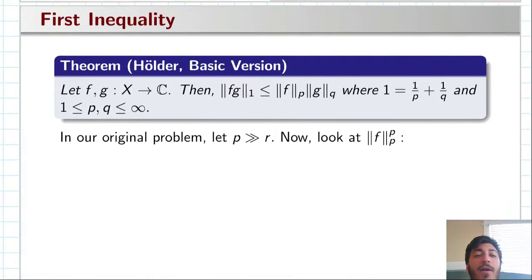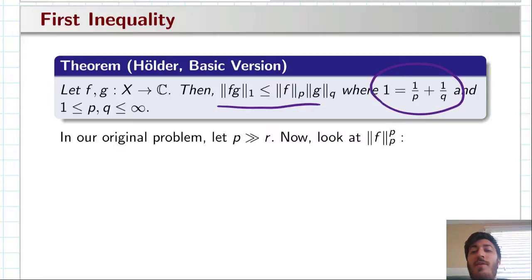So, the first thing I want to remind everyone of is the basic Holder inequality. You may have seen generalizations of this, but really the most basic version is where you have two functions defined on this measure space X, they're complex valued or even just real valued. And the one norm is bounded above by the p and q norm, where p and q are conjugate pairs. And what I mean by that is p and q satisfy this relationship here. And in particular, for our problem, we allow p and q to be 1 and infinity. The proof of that is a little bit different than the proof of the actual Holder inequality, but it's not too hard to see.